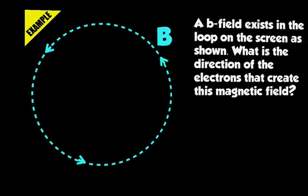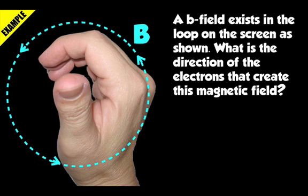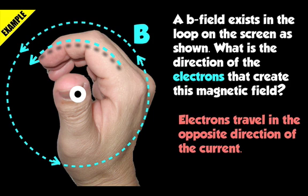One more example: a magnetic field is rotating in a counterclockwise direction. What are the directions of the electrons that create this magnetic field? I take my closed right hand, place it on top of the screen, and curl my fingers in the rotation of the magnetic field — counterclockwise. My thumb ends up pointing out of the screen, so the current is coming out of the screen. But the question asks about electrons, which travel in the opposite direction of conventional current. So the electrons are going into the screen.